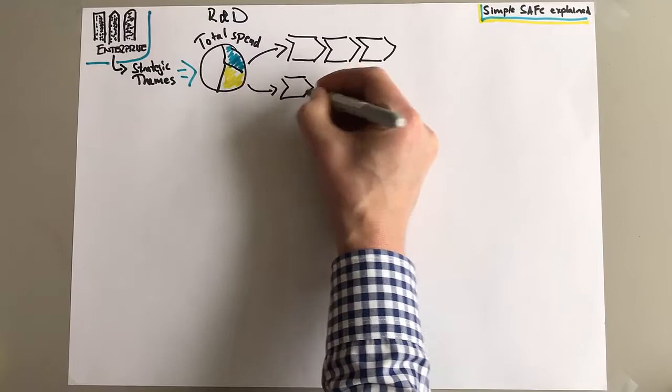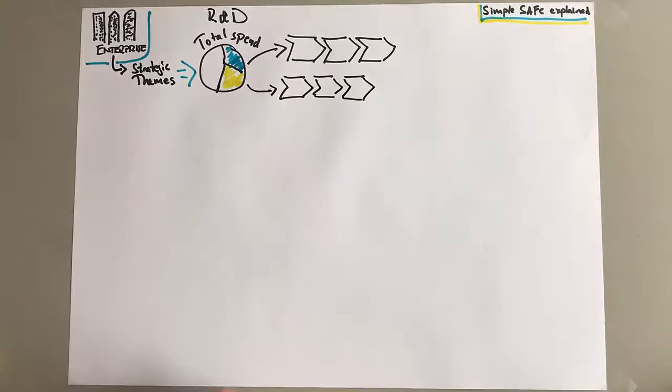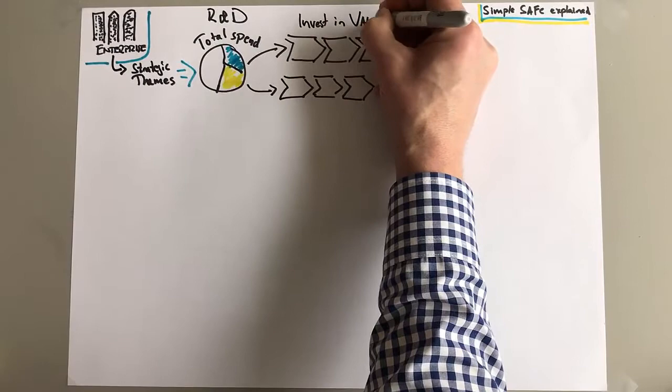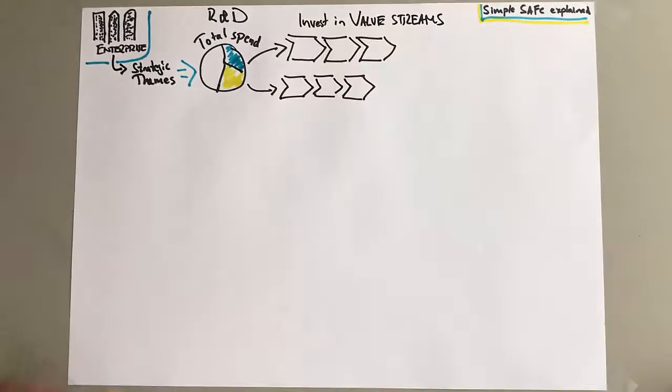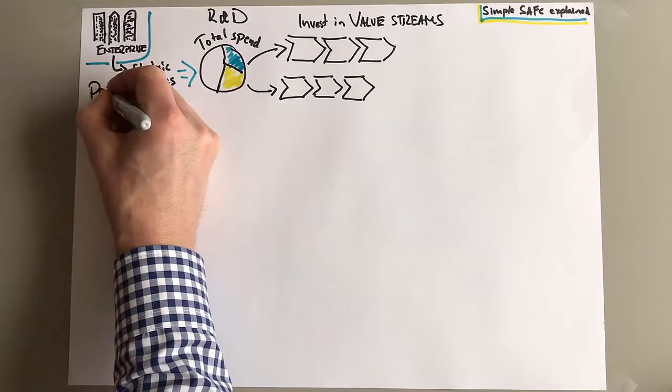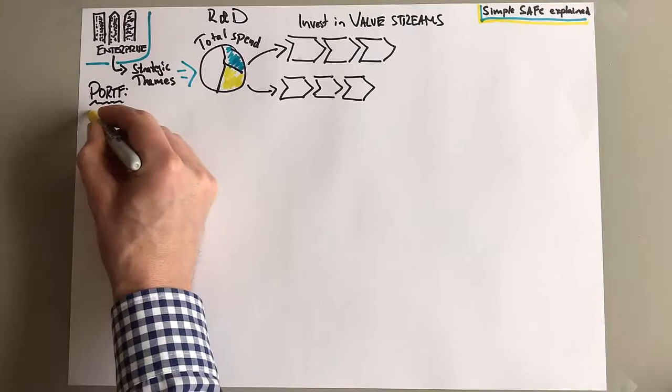A value stream could be, for instance - we have examples of customers who are building products that they're selling to their customers. Well then the value stream would be a product or a product line, and you would have a program servicing that value stream. For internal, if you're a big financial institution for instance, value stream can look different. It could be an internal value stream supporting a value stream that actually goes out to the customers.